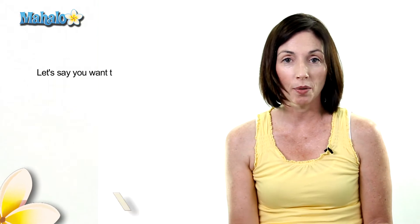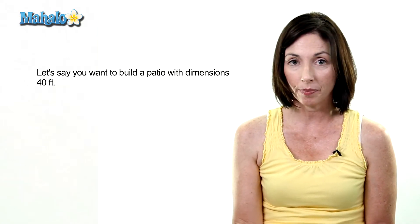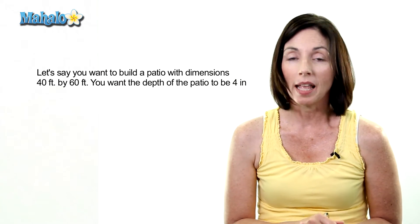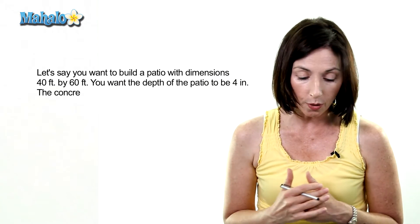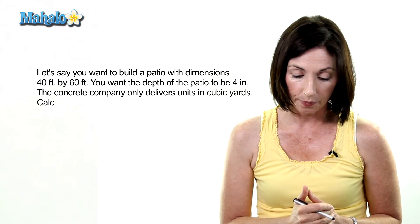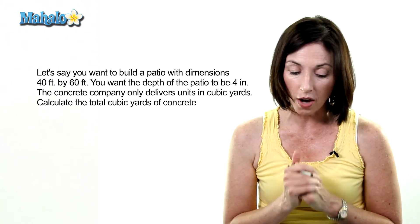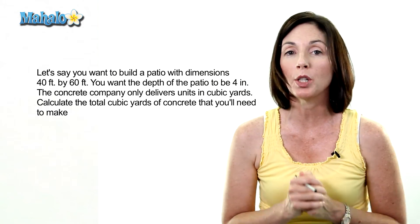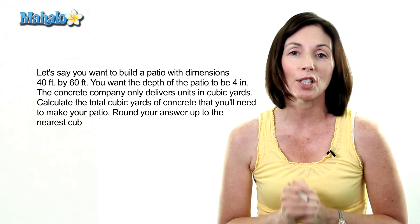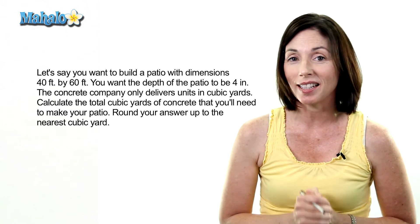Let's say you want to build a patio and the dimensions are 40 feet by 60 feet. You want the depth of the patio to be 4 inches. Now, the concrete company only delivers units in cubic yards. Calculate the total cubic yards of concrete that you'll need to make your patio, and please round your answer up to the nearest cubic yard. Select whichever answer you think is correct.